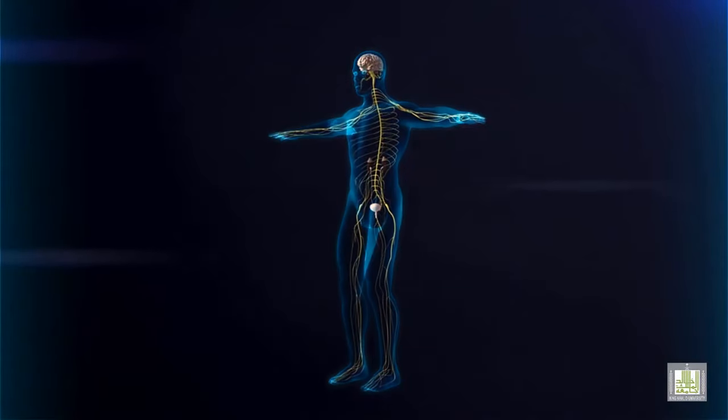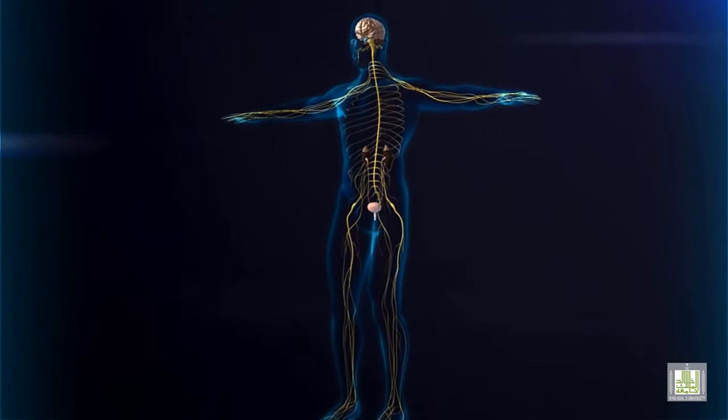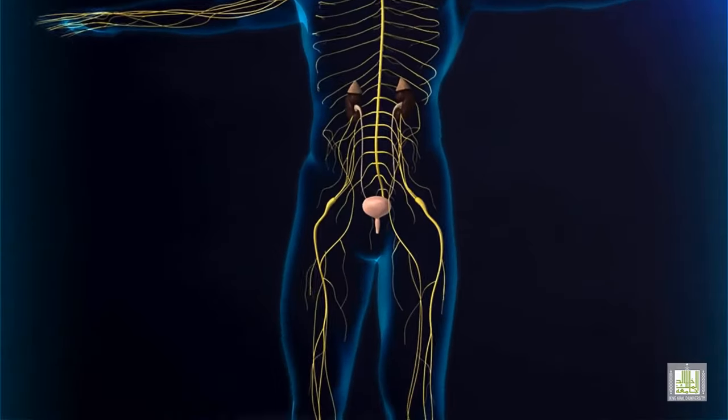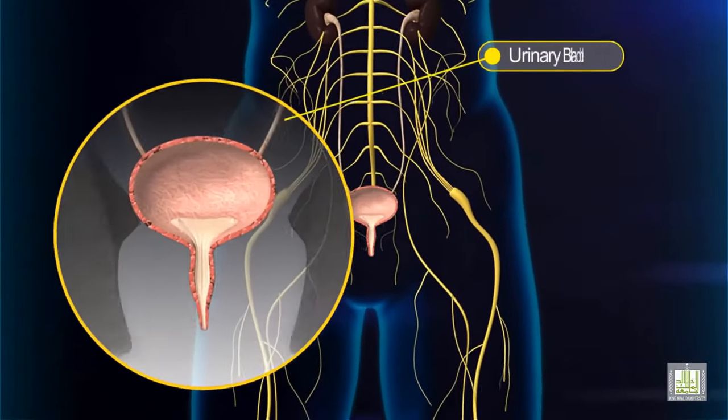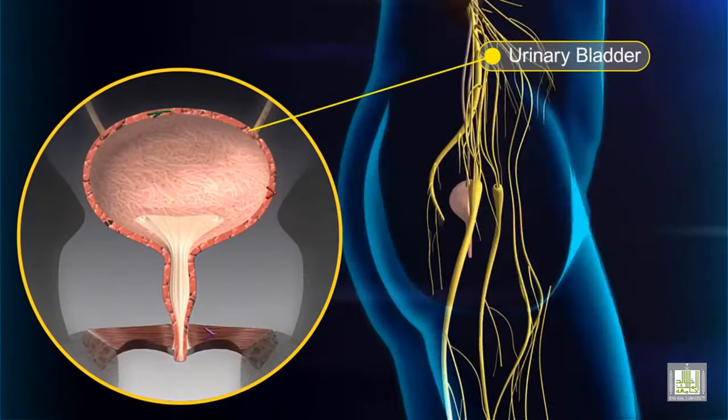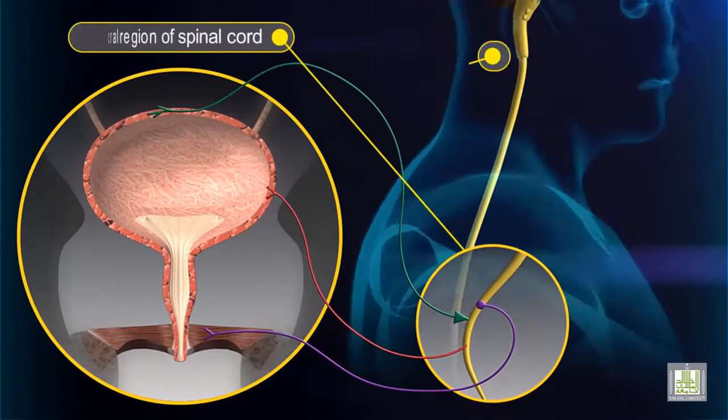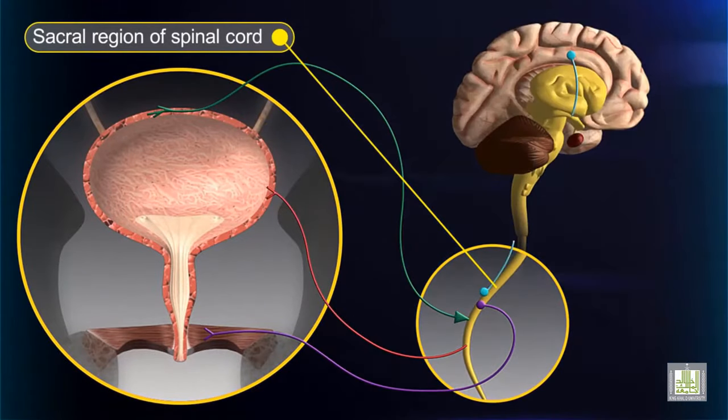The micturition reflex involves impulses traveling from the urinary bladder to the sacral region of the spinal cord and back to the bladder. It is coordinated by neurons in the spinal cord and can be influenced by signals from the brain.